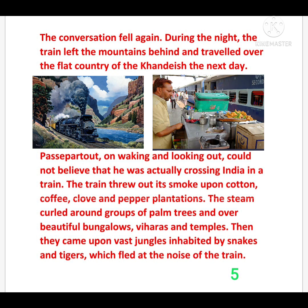During the night, the train left the mountains and traveled over the flat country of the Ganges. The next day, Passepartout, walking and looking out, could not believe that he was actually crossing India in a train. The train emitted its smoke upon cotton, coffee, clove, and pepper plantations. The steam curled — meaning twisted — around groups of palm trees, over beautiful bungalows, and past temples. Then they came upon vast jungles inhabited by snakes and tigers, which fled at the noise of the train — the animals ran away when they heard it.